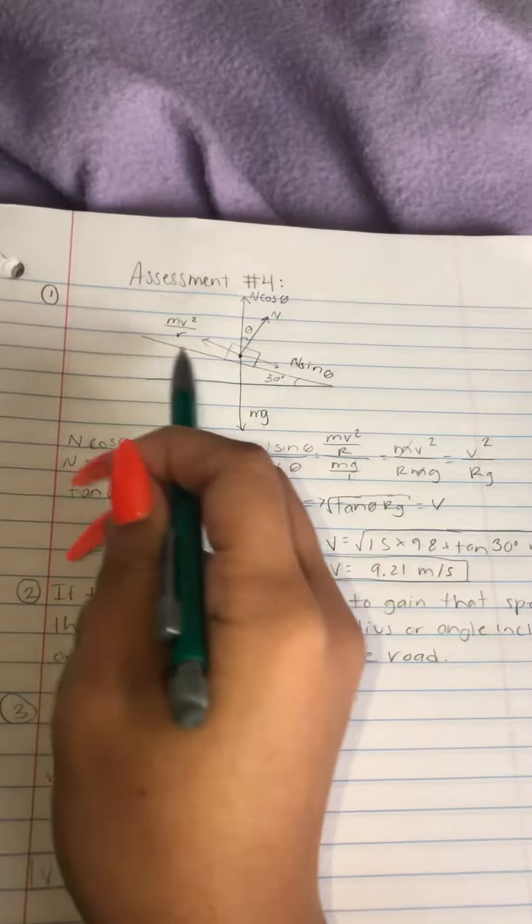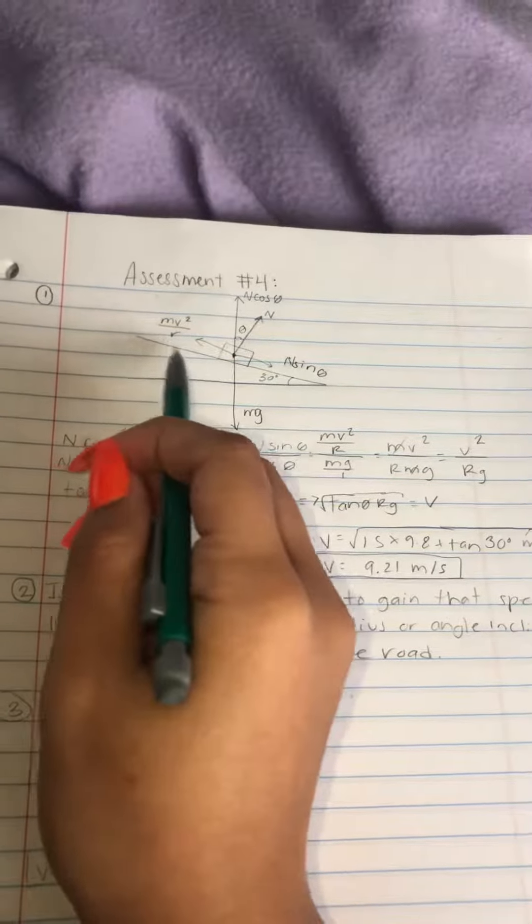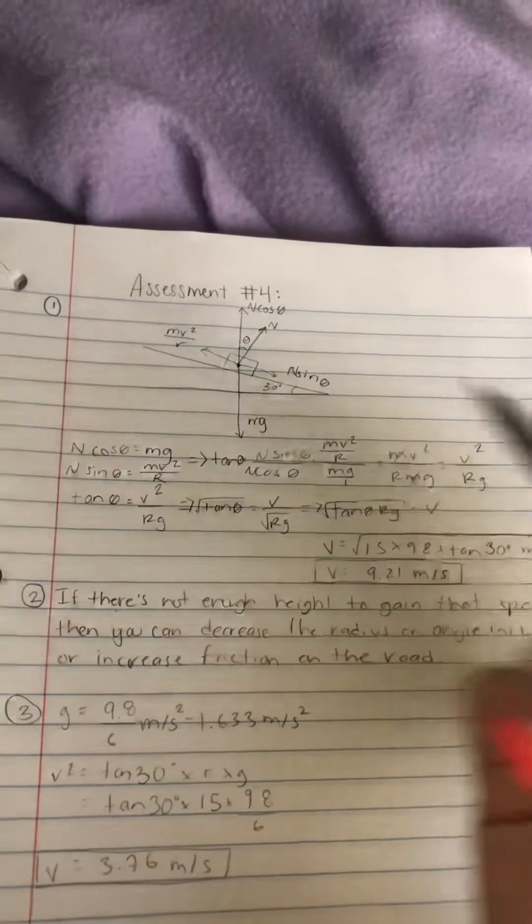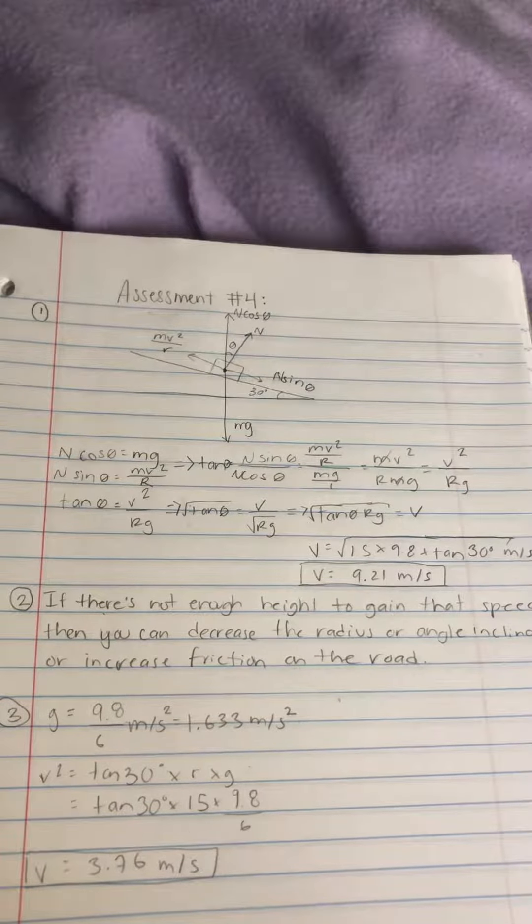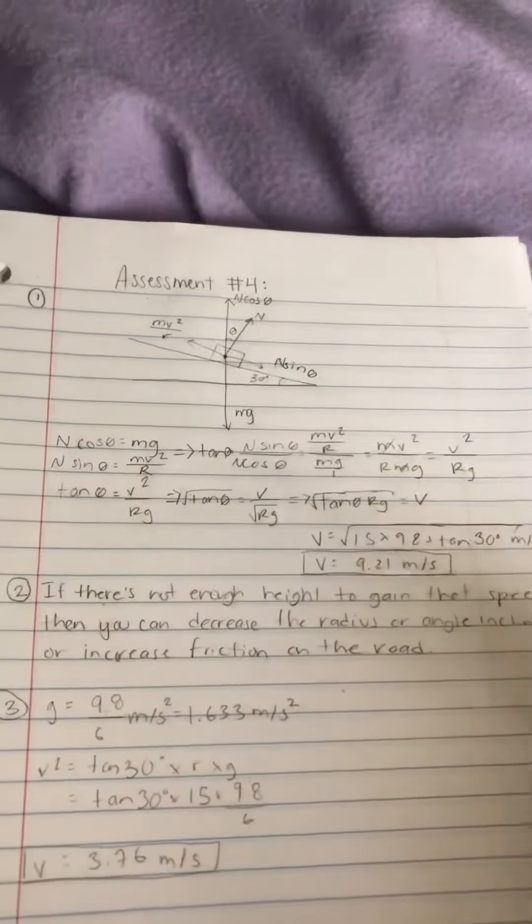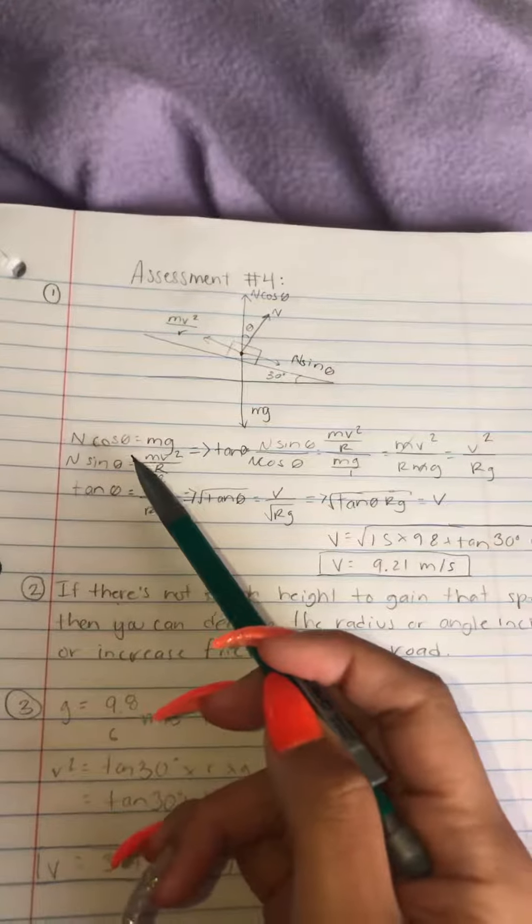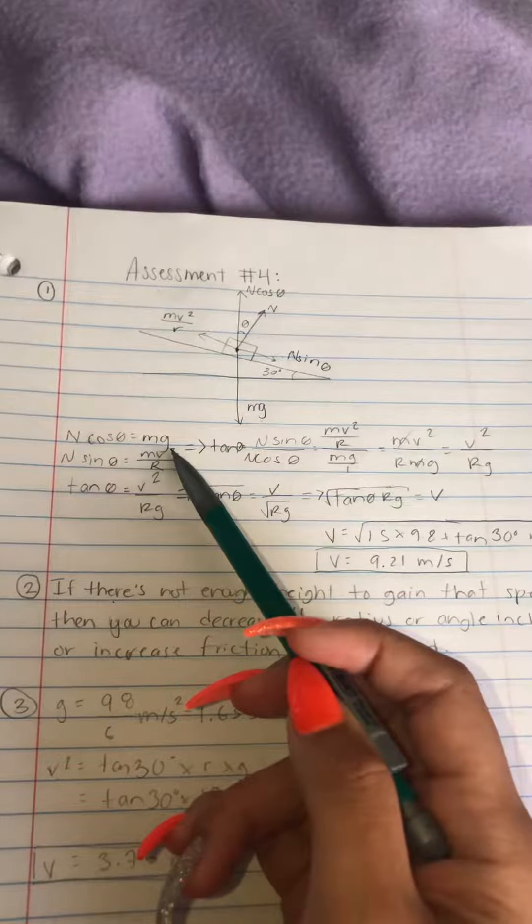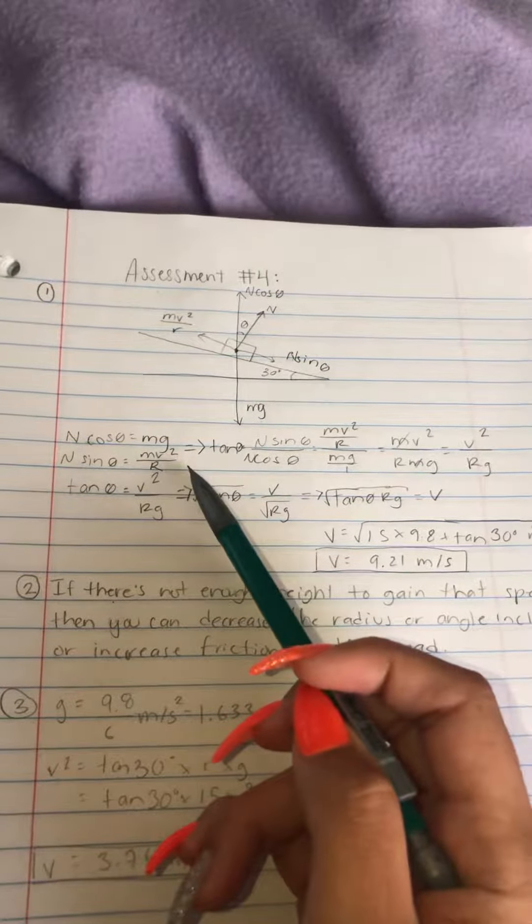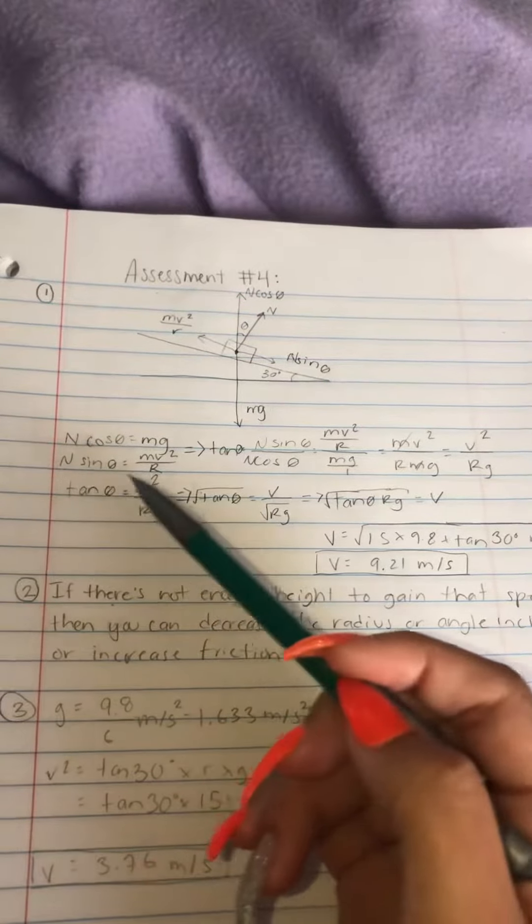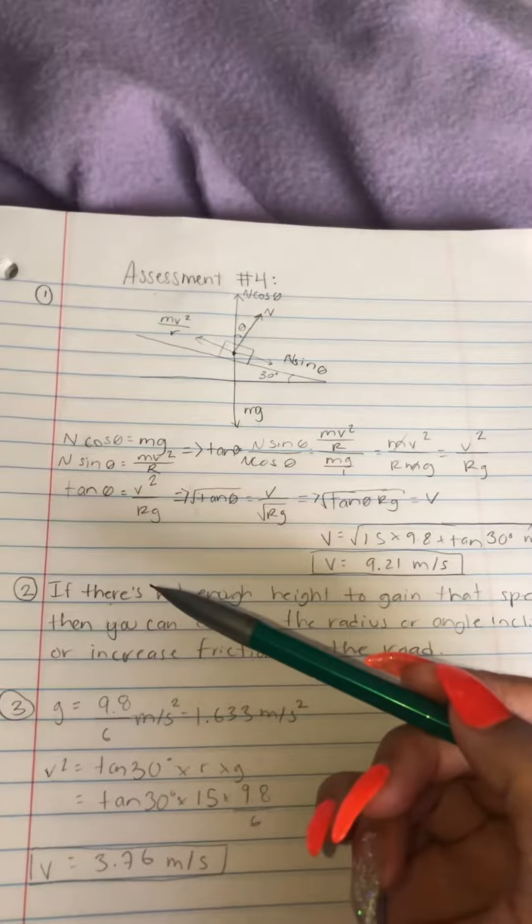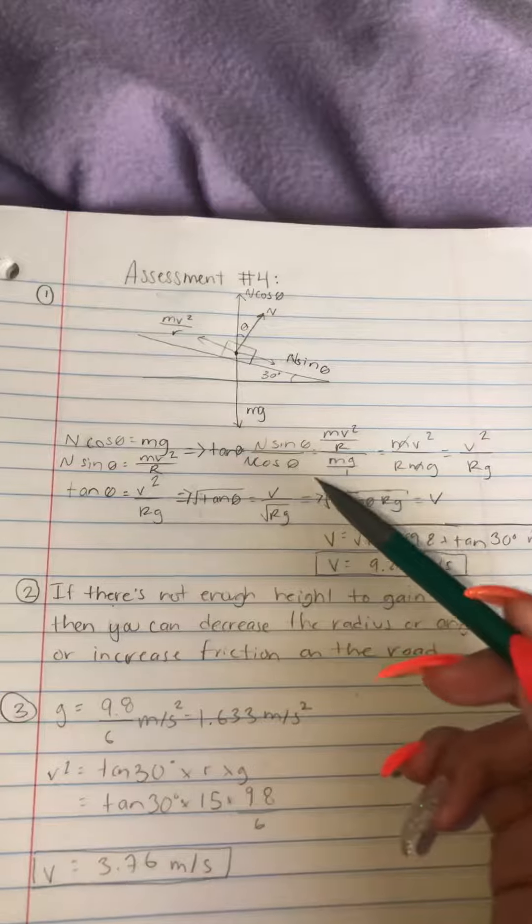And this would be the circular motion formula, mv² over r. So what they're asking you is for you to find the velocity here. So you have n cosine theta, that's mg, n sine theta is mv² over r. Now you know that sine over cosine is tangent.